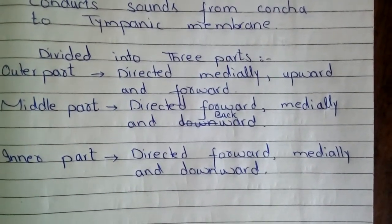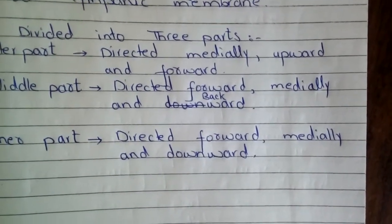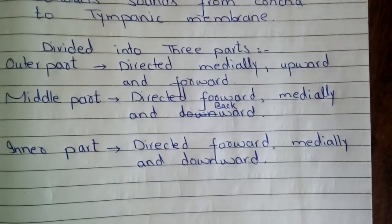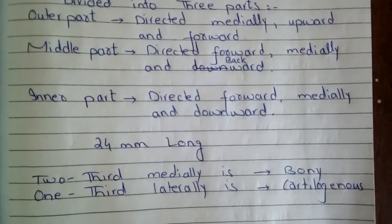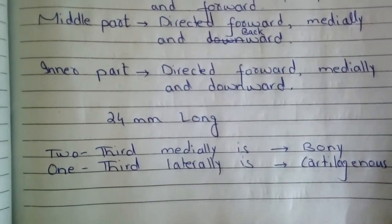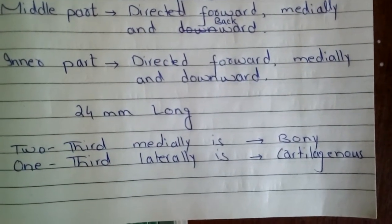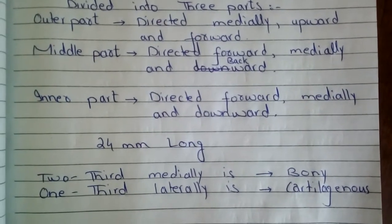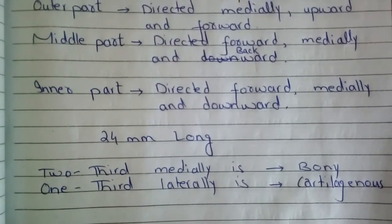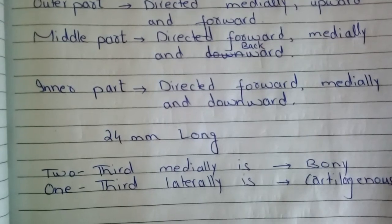The outer part is directed medially, forward, and upward. The middle part is directed forward, medially, and backward. The inner part is directed forward, medially, and downward. It is 24 mm long. Two-thirds medially is bony and one-third laterally is cartilaginous. The bony part is narrower than the cartilaginous part of the canal. The narrowest part of the bony canal is called the isthmus.